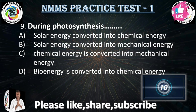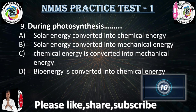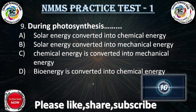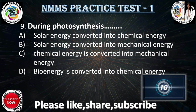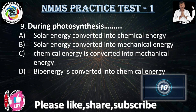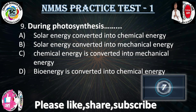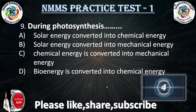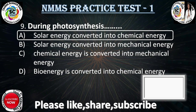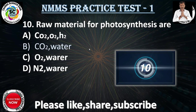Question No. 9: during photosynthesis, which energy is converted into which energy? Option A: solar energy is converted into chemical energy. Option B: solar energy is converted into mechanical energy. Option C: chemical energy is converted into mechanical energy. Option D: bio energy is converted into chemical energy. In photosynthesis, solar energy is converted into chemical energy.